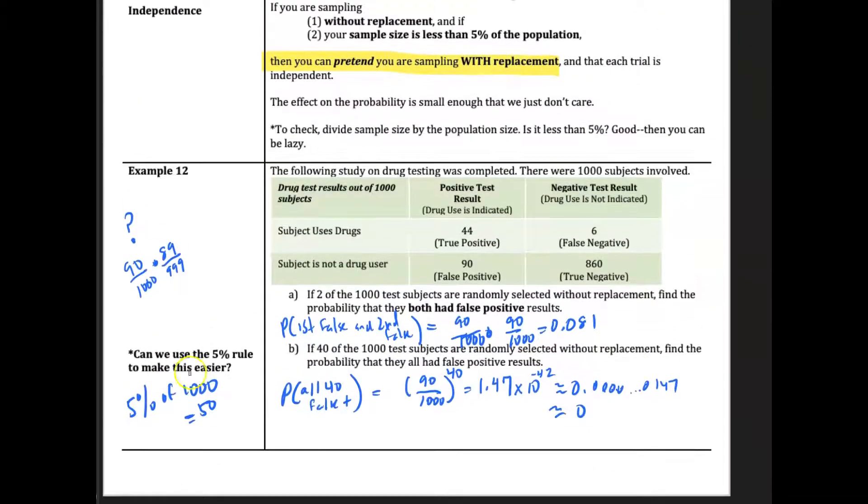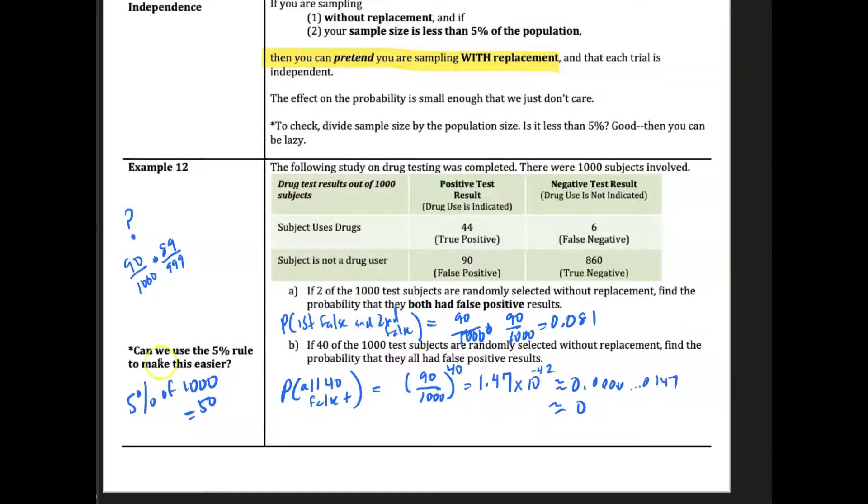So here's one last example here. Can we use the 5% rule? 5% of 1,000 is 50. We are sampling 40. So we can use independence. The independence rule just multiply, even though we are doing it without replacement. Very important here. Two of the subjects out of 1,000 are without replacement. Find the probability they're both false positives. Well, false positive means they're telling you you're sick when you're not sick. That's 90 out of 1,000, times 90 out of 1,000. Even though you're drawing two people, because the sample size is so small, we can assume independence. And so we end up with that multiplication there. And the same thing with 40, just 90 over 1,000 raised to the power of 40. We're just going to assume independence. We don't have to do 90 over 1,000 times 89 over 999 and so forth. We can assume independence because the samples are less than 5% of the population.